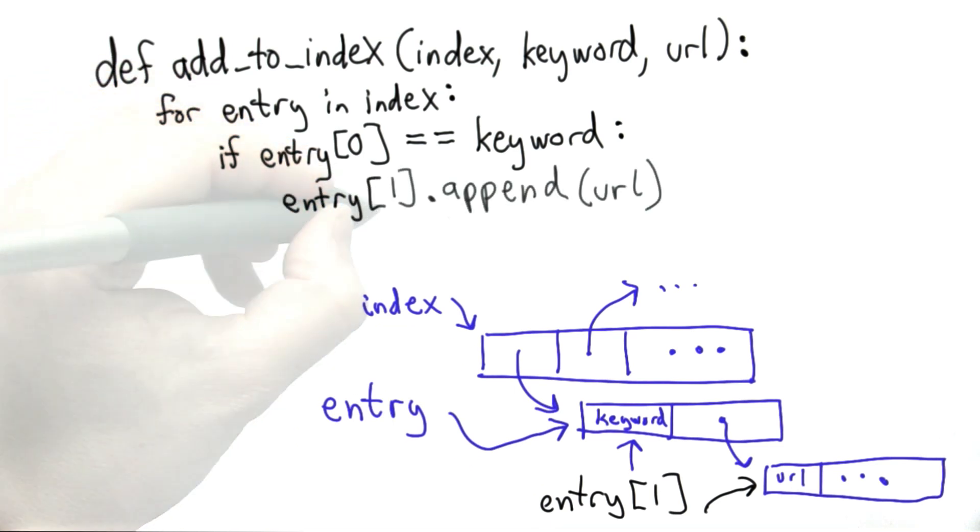So here we've found an entry that matches the keyword we were looking for. This means the keyword is already in the index. We've added the new URL to the list of URLs associated with that keyword. And so we're done. We have nothing else to do. What we want to make sure is that we don't continue and do anything else.